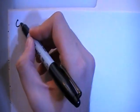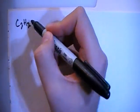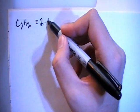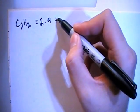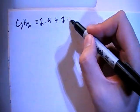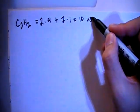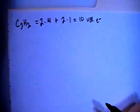We've got C2H2. So that's going to give us two carbons each with four valence electrons plus two hydrogens each with one valence electron for a total of ten valence electrons.